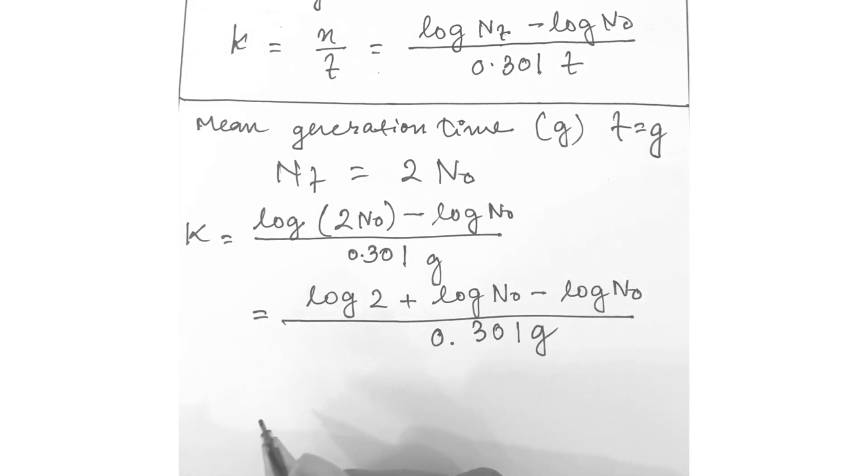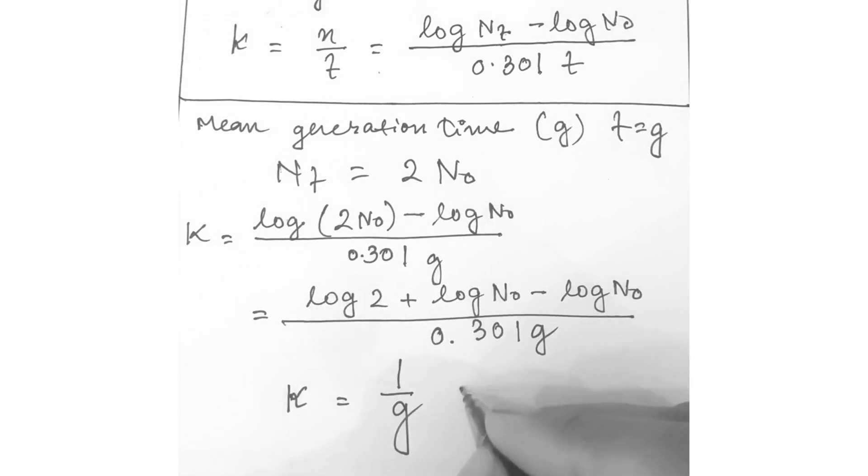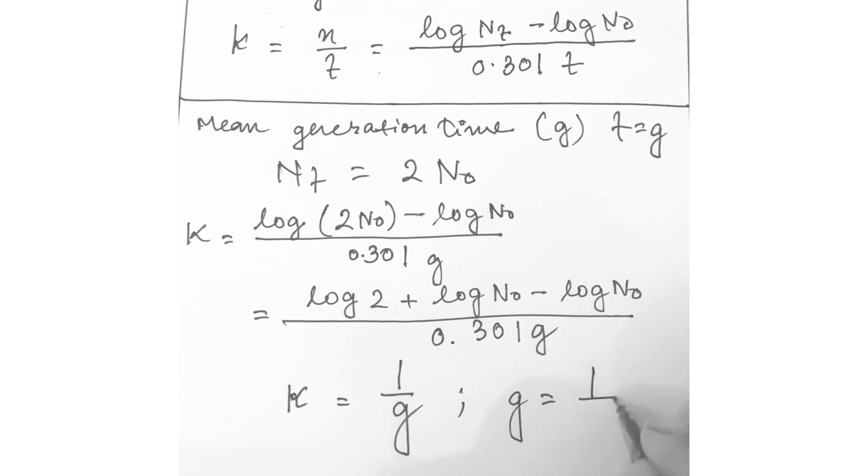Hence from this equation we can calculate that k is equal to 1 by g, or we can also write it in this way: g equals 1 by k.